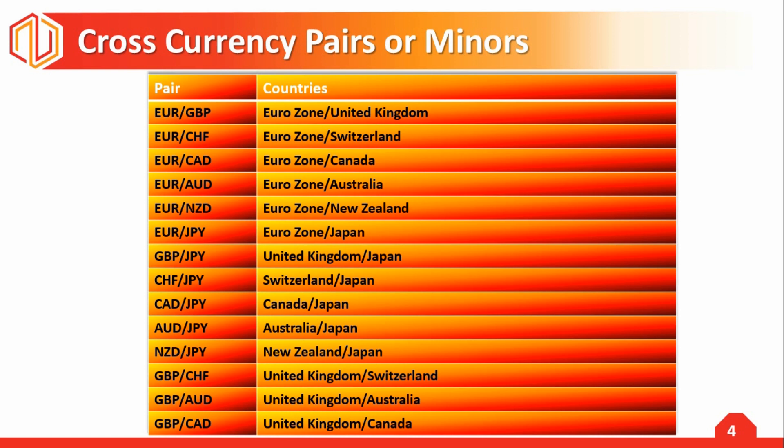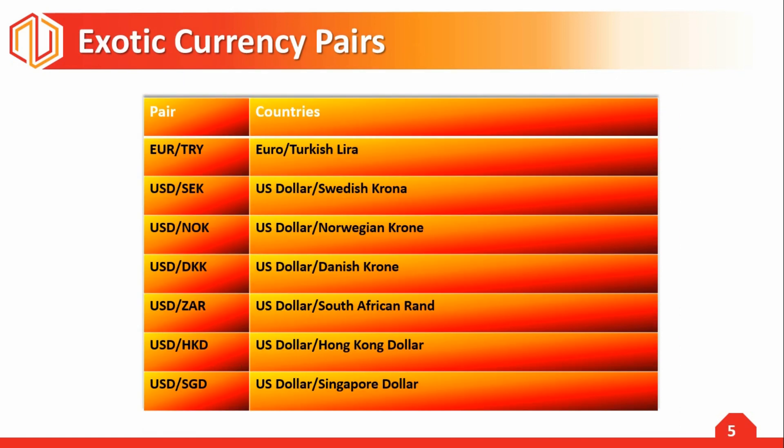These crosses are made from the major non-US dollar currencies, which is basically the combinations of the euro, the pound, and the Japanese yen. The third list that we have is called the exotic currency pairs.